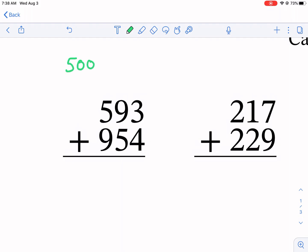If we break down 593, it's essentially 500 plus 90 plus 3. It's not just a 5, it represents 500, and it's not just 9, it represents 90, and 3 is just the ones place.